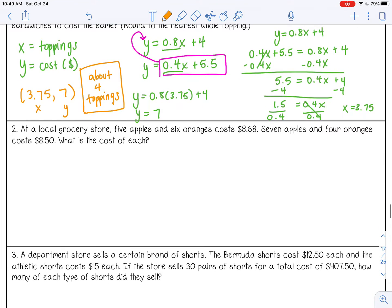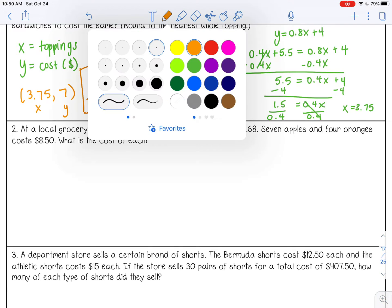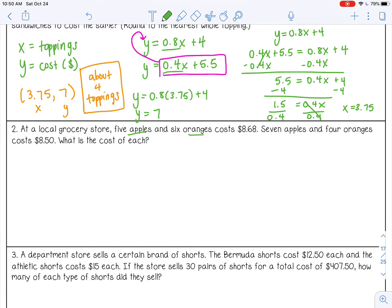All right, number two. At a local grocery store, five apples and six oranges cost $8.68. Seven apples and four oranges cost $8.50. What is the cost of each? So here I have apples and oranges. Those are going to be my two variables. Actually, let's make apples x because I see that first.